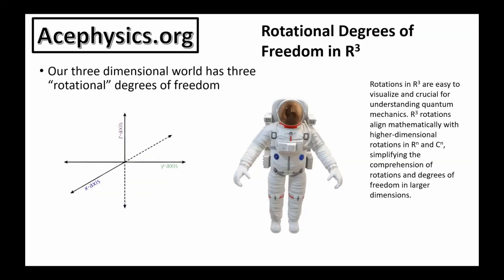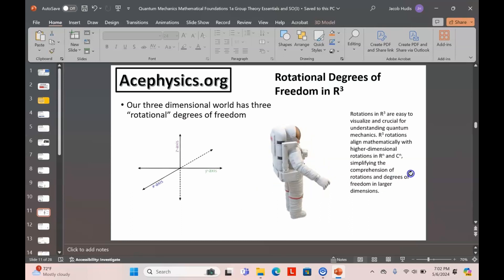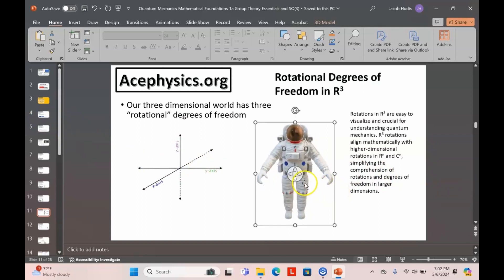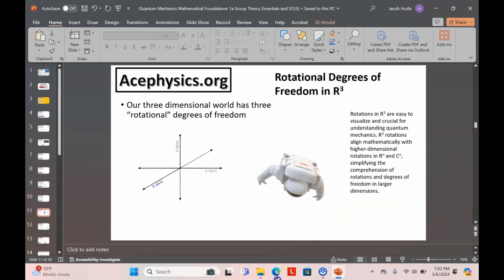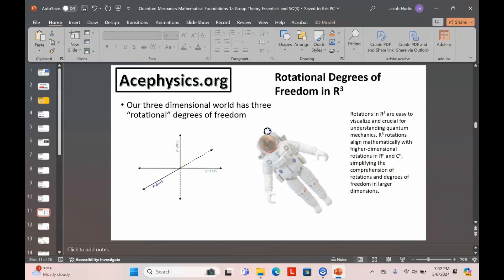In addition to representing the position of an object, it's also required to represent its orientation. In our three-dimensional world, there are three rotational degrees of freedom: rotating about the z-axis, rotating about the y-axis, and rotating about the x-axis.